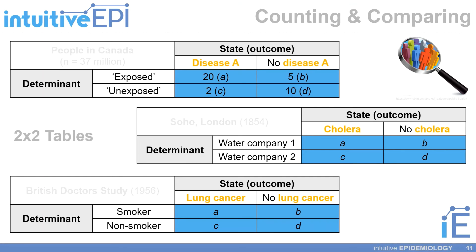I've taken this example and mapped it to the Soho-London cholera outbreak, where John Snow compared water company A versus company B, and looked to see whether individuals from a given company had come down with an infection with cholera versus whether they did not.